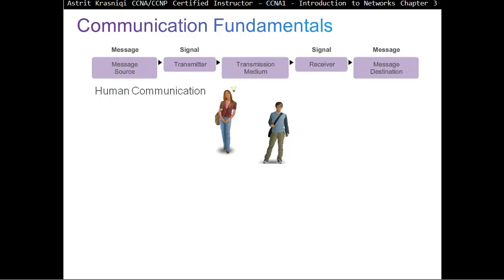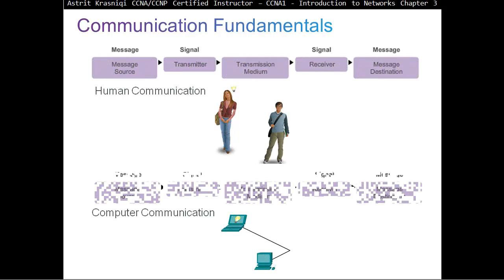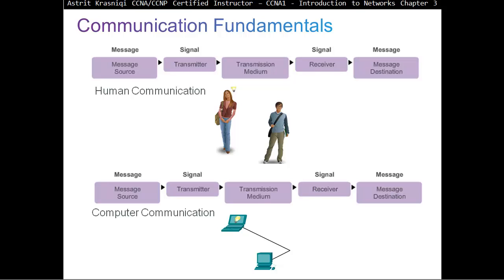Communication Fundamentals. In both human communication and computer communication, we have a message source — there's always going to be a source and a destination, where we send the message. We need some kind of signal to send that message, and a transmission medium. For humans that would be the air we use to speak. Computers can use air as well, which is wireless, or they can use copper, or fiber which is optical.